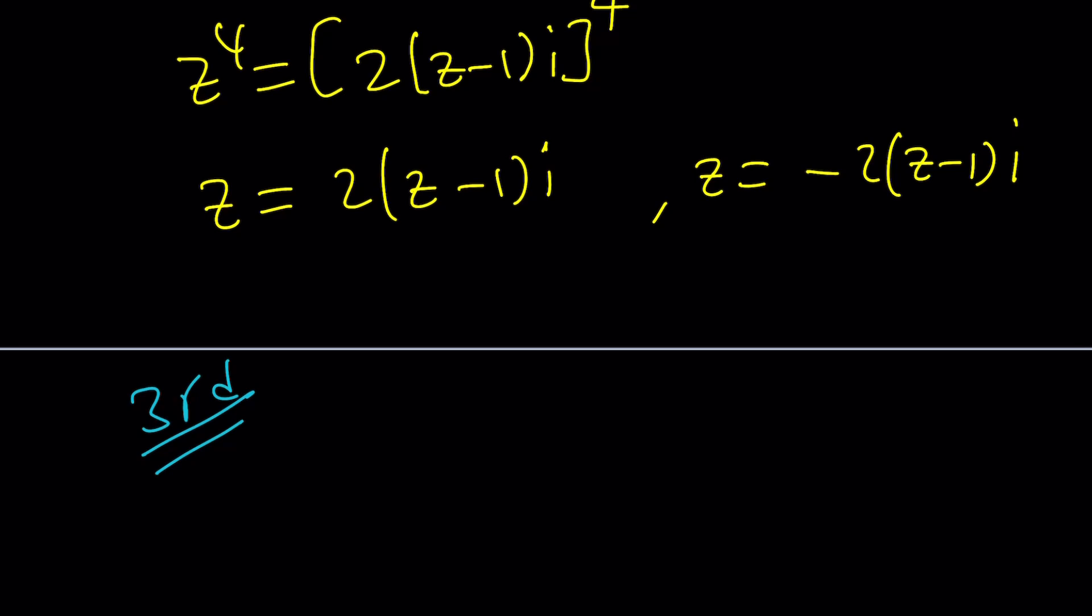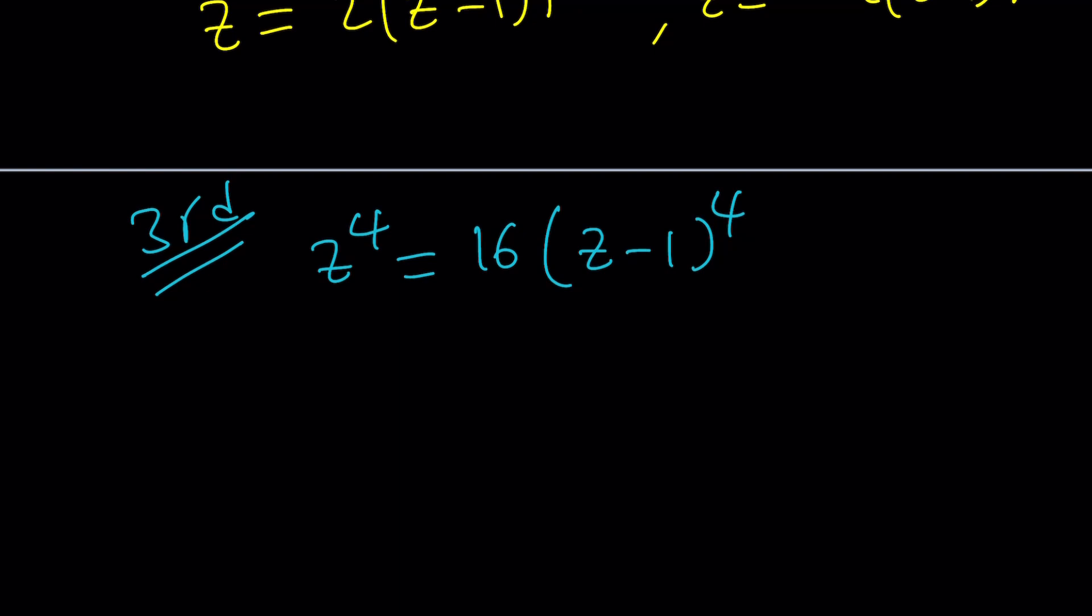So remember, with the second method we took the fourth roots. So another question that we can raise is, can I take square roots instead of fourth roots? And the answer is, why not? So let's go ahead and do that. If you take square roots, you're going to get Z squared equals 4 times Z minus 1 squared, or Z squared equals the opposite of that. You see how the opposites work here? So you're going to get these two solutions.